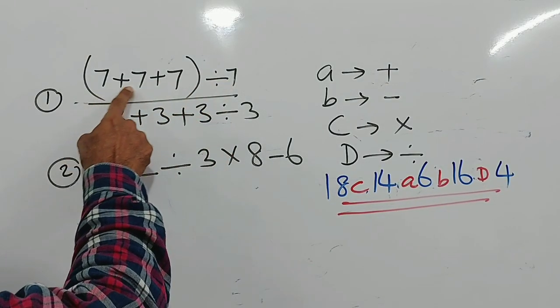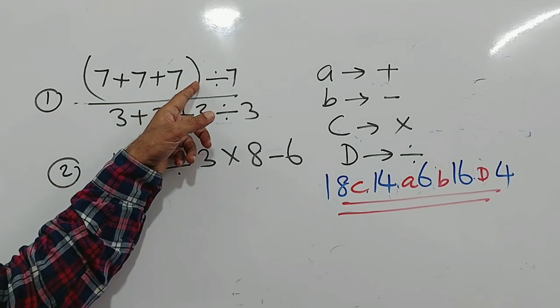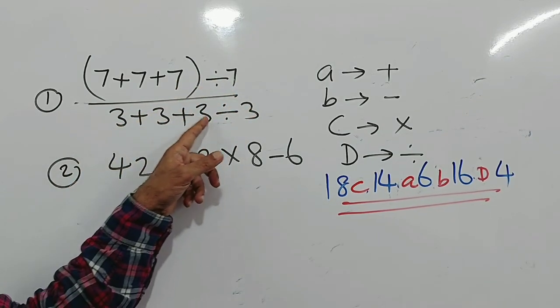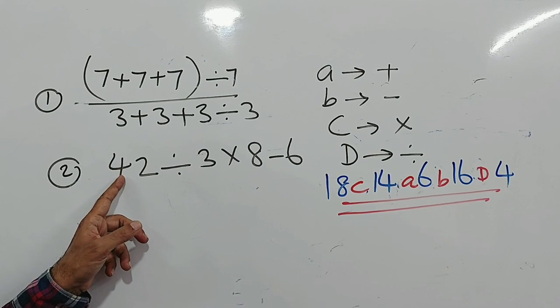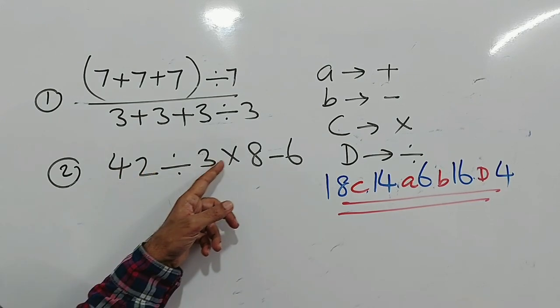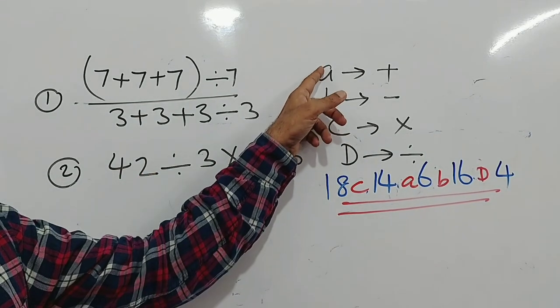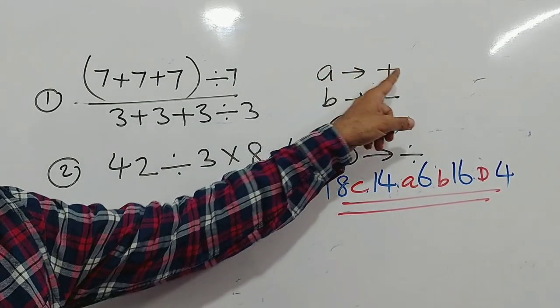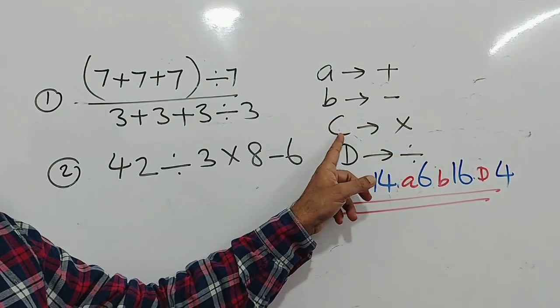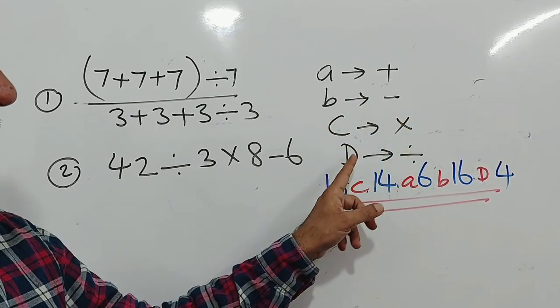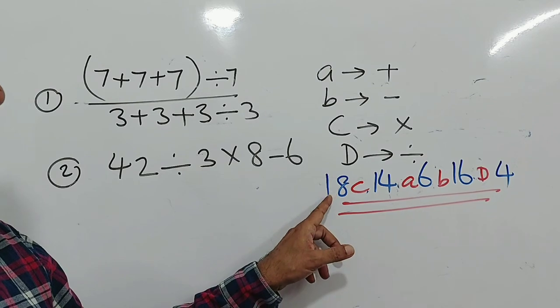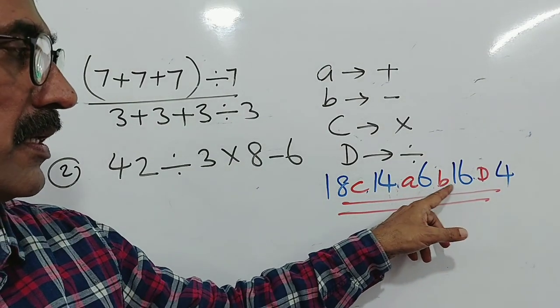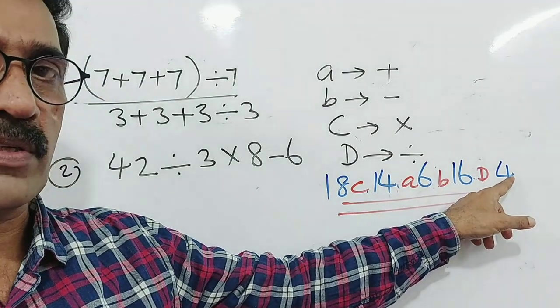Here are some questions for you to work on. First: (7 plus 7 plus 7 plus 7) divided by 7, by 3 plus 3 plus 3 divided by 3. Second: 42 divided by 3, 3 into 8 minus 6. Third: if A means plus, B means minus, C means multiplication, D means division, what is 18 C 14 A 6 B 16 D 4? Let us also discuss some questions from your side.